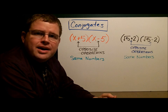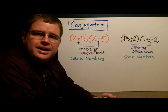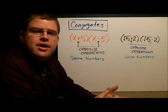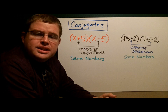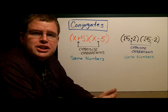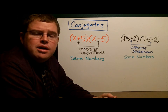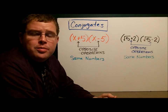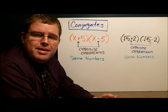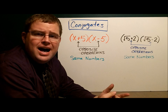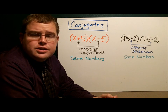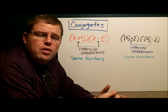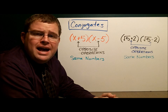Sometimes when we're simplifying radicals and we need to rationalize the denominator, we have an expression in the bottom that includes addition or subtraction — namely, we have a binomial down there. So for example, maybe we have 5 over 2 plus the square root of 7.